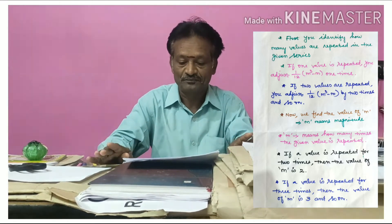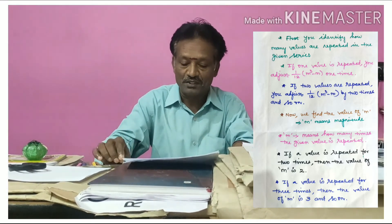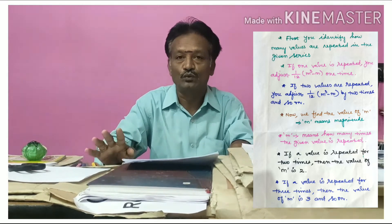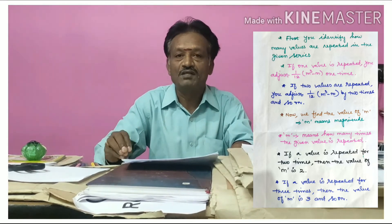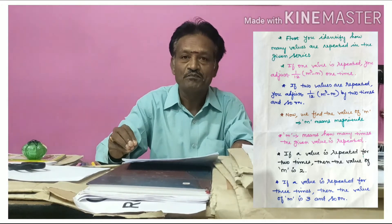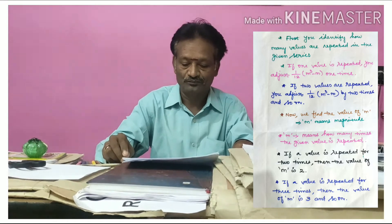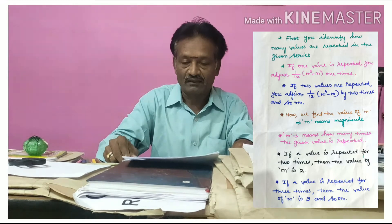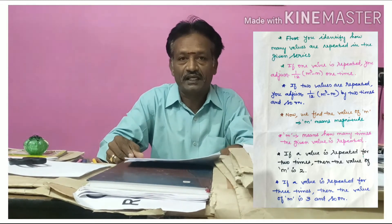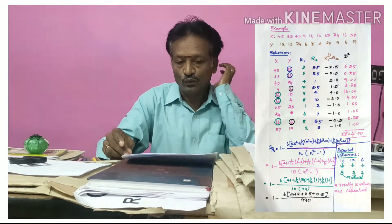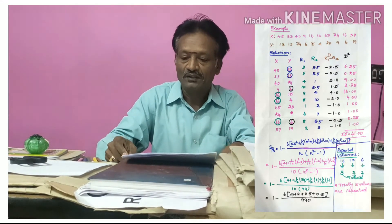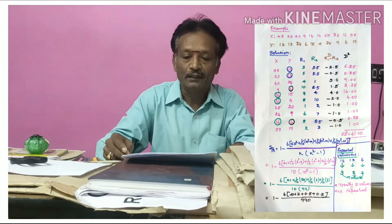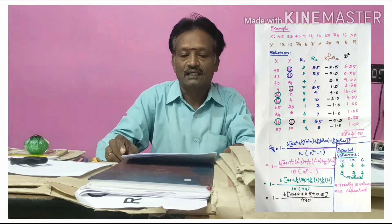Now we find the value of m. Here, m means the magnitude — that is, how many times a given value is repeated. For example, if the value 60 appears two times in the series, then m equals 2. If a value is repeated three times, then m equals 3, and so on. Now we will do some examples to calculate rank correlation when equal ranks are given.